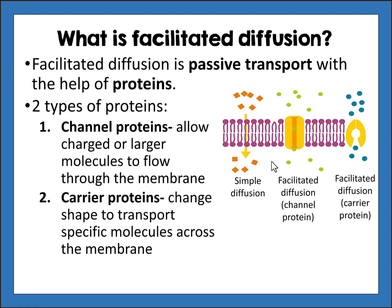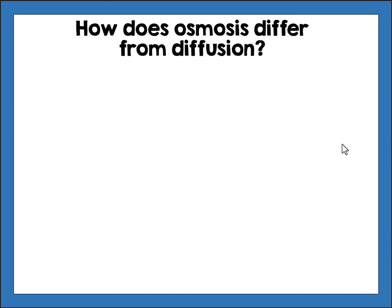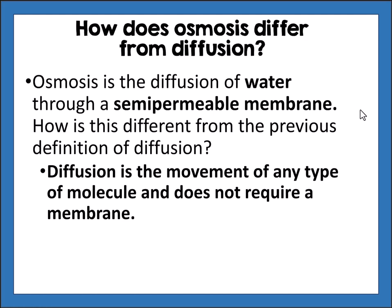All particles in facilitated diffusion are still moving from an area of higher concentration to lower concentration. Osmosis is the simple diffusion of water through a semi-permeable or selectively permeable membrane. Diffusion involves the movement of any type of molecule and does not require a membrane, while osmosis specifically involves water and requires a membrane between the two sides.